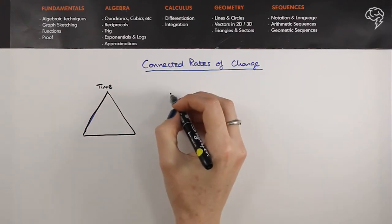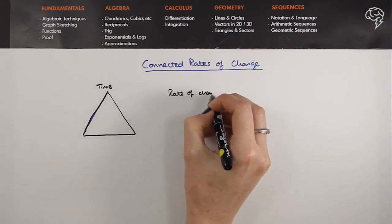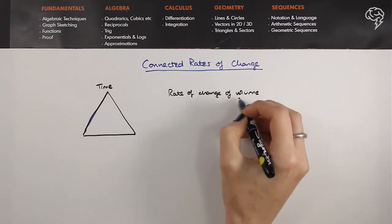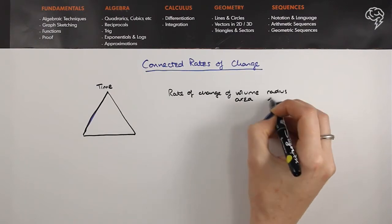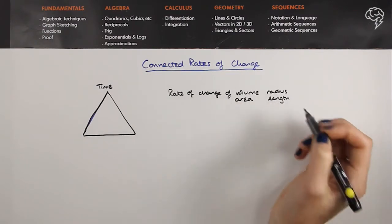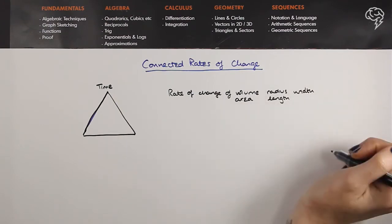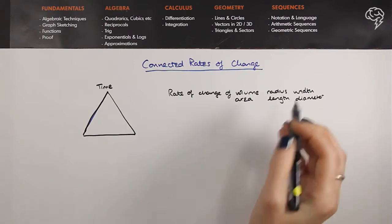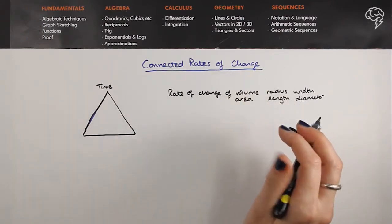The question is going to go on and on about some stuff that's happening and it's going to mention the rate of change of things. The rate of change, for example, of a volume, or it might be a rate of change of an area, or it might be a rate of change of a radius, or it might be a length, or what else could it be - width, volume, area, but I can't think of anything else, diameter, this sort of thing. You're going to have two things that are changing as time changes.